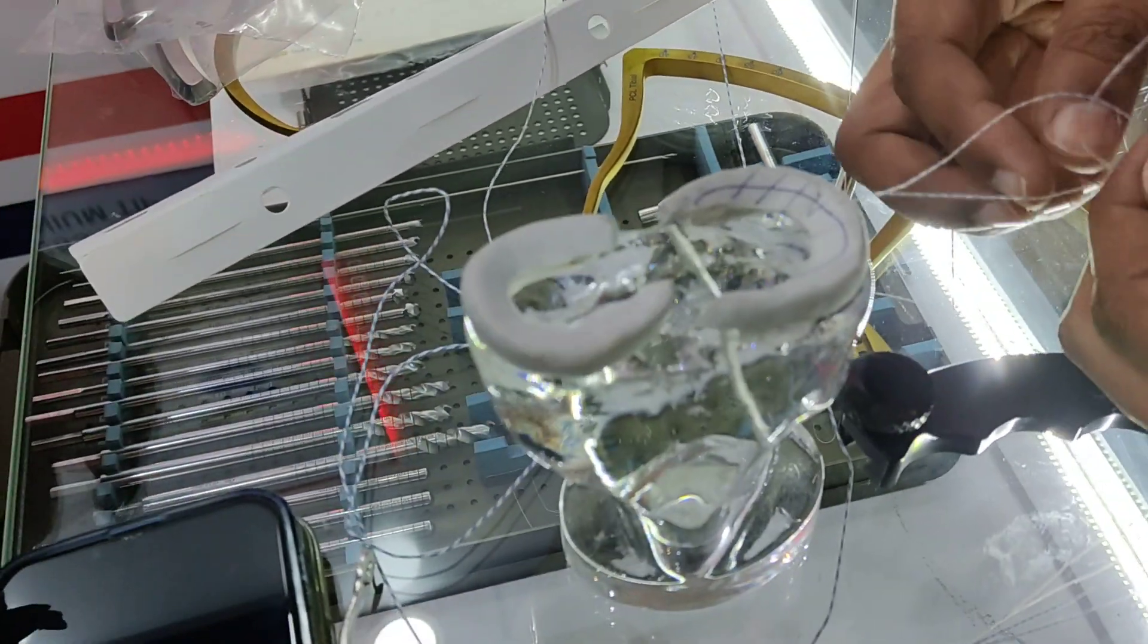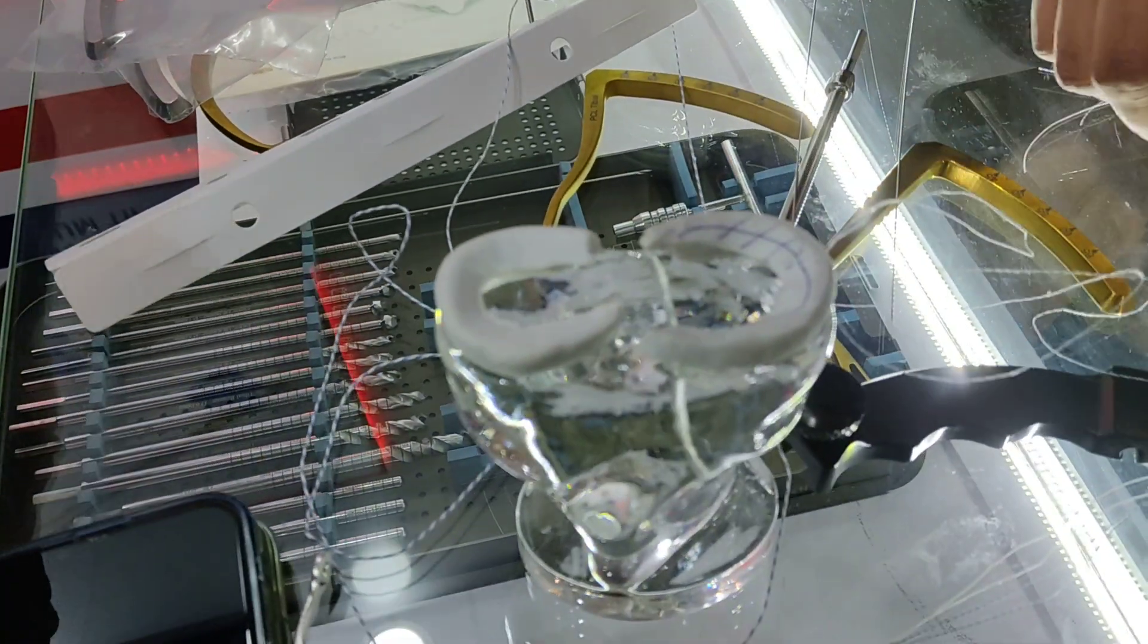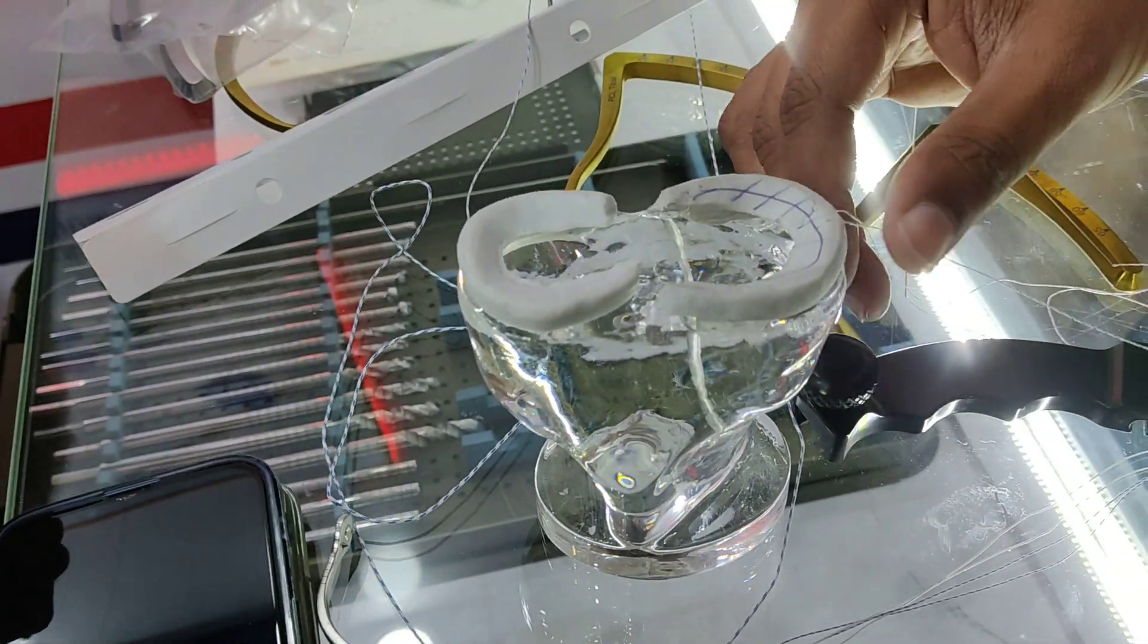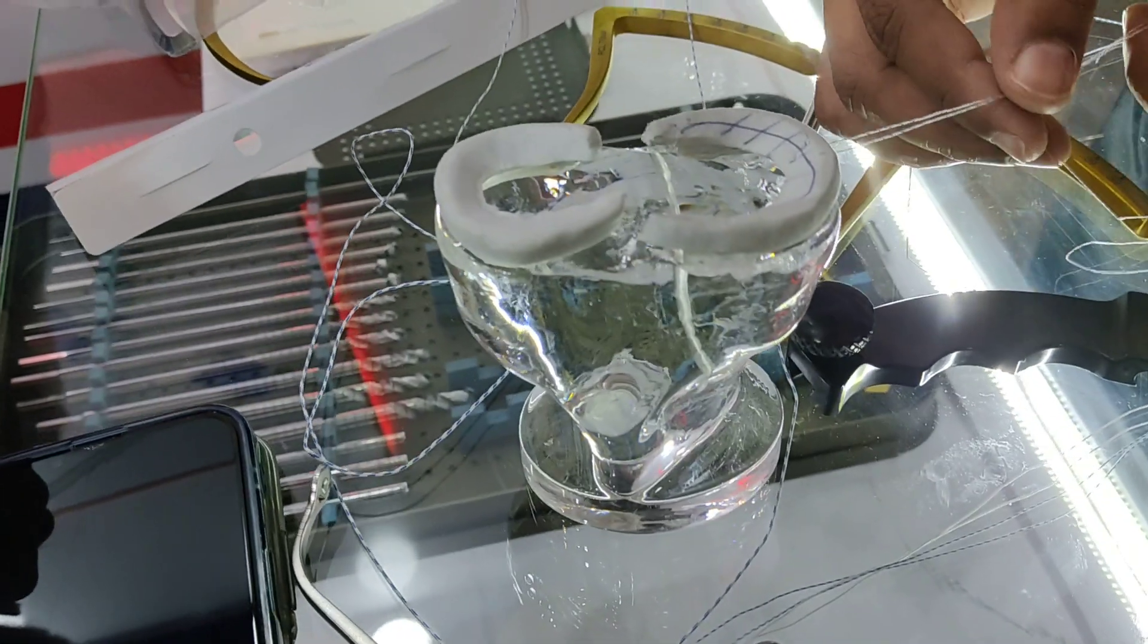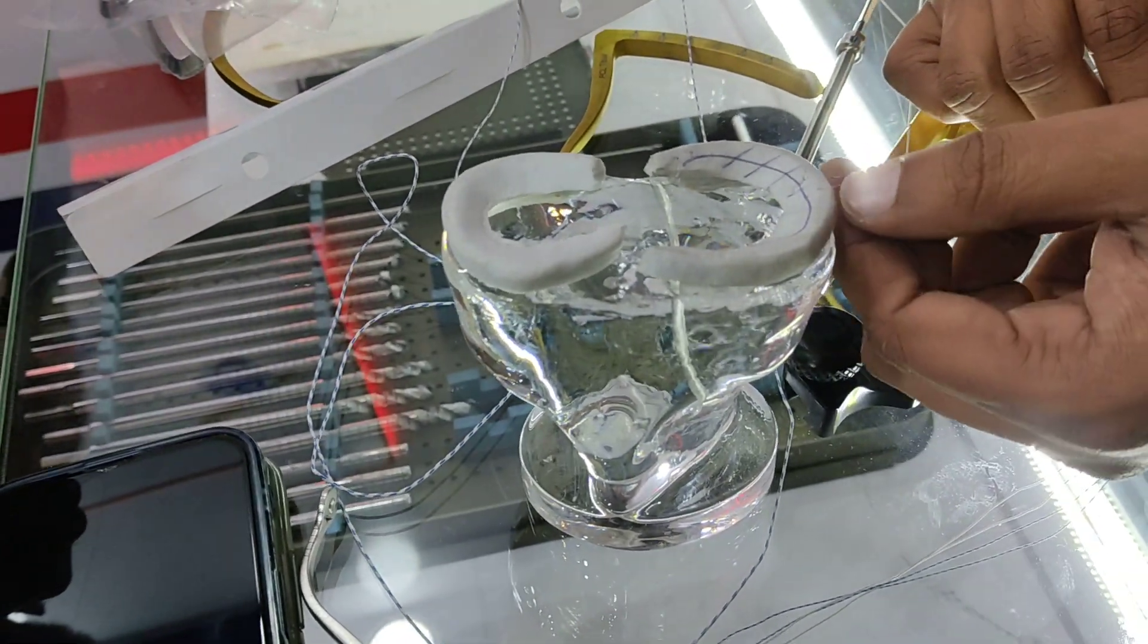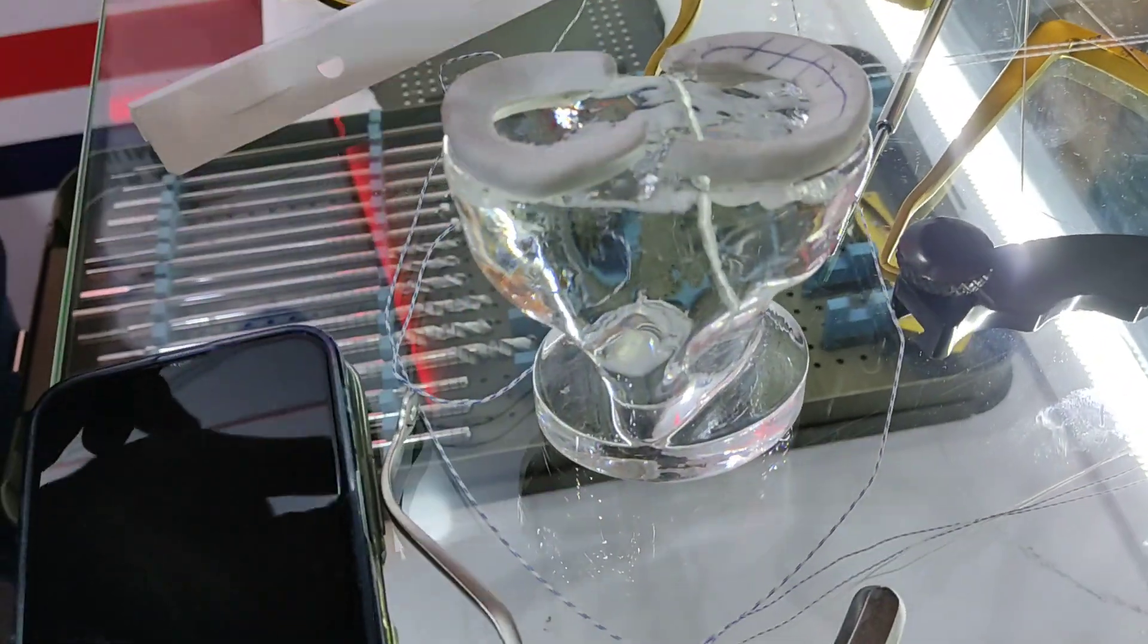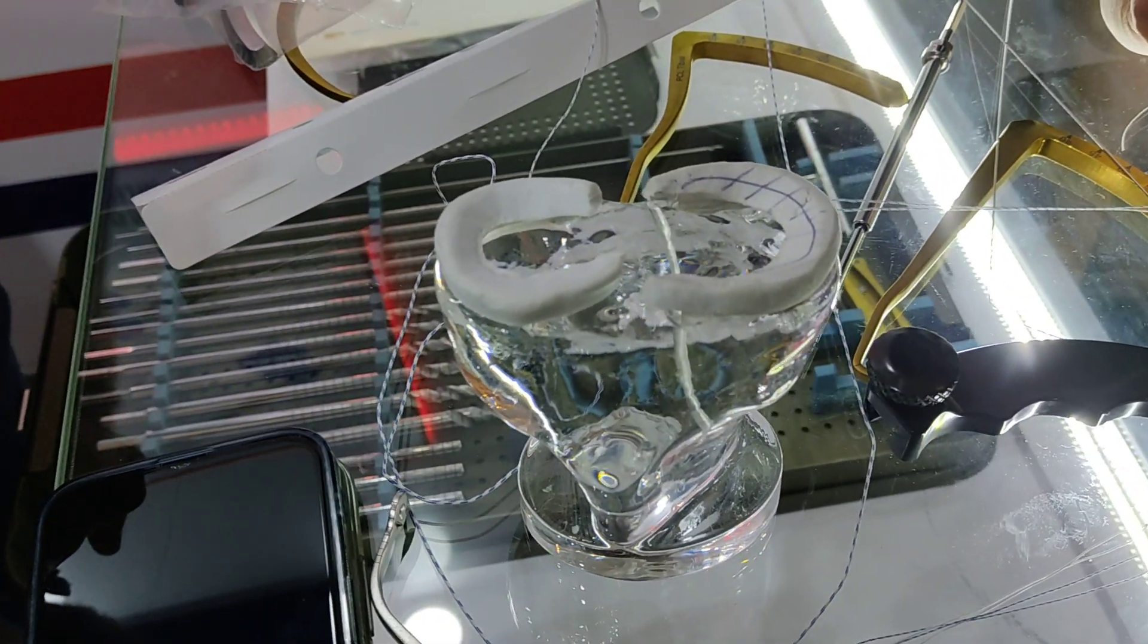This is the gold standard of doing a meniscus repair. Inside-out technique is considered to be the gold standard, and the repairs done by inside-out are the strongest as compared to the all-inside and the outside-in techniques.